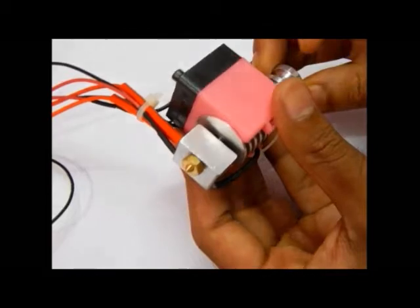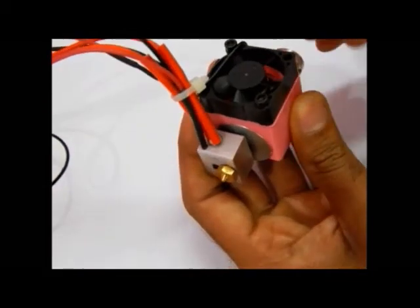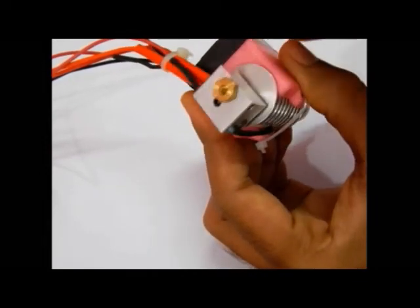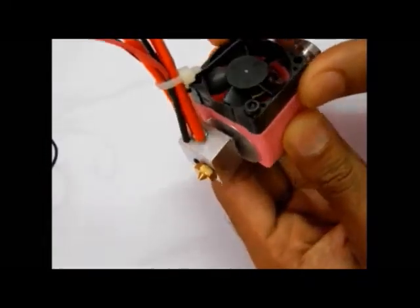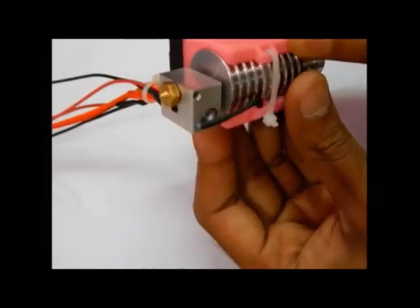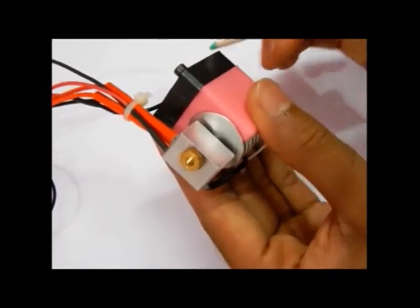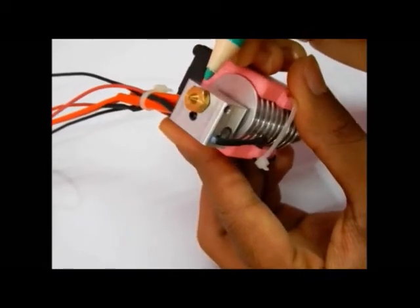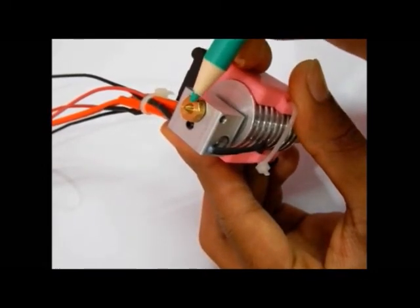3D Print Onyx will dispatch a completely assembled hotend like this one. We will fix the heater cartridge into the heater block, thermistor into the heater block, and fan will be mounted on the fan shroud around the aluminum heatsink. But before installing this onto your printer, you must heat it up to 290 degrees Celsius and tighten this brass nozzle.